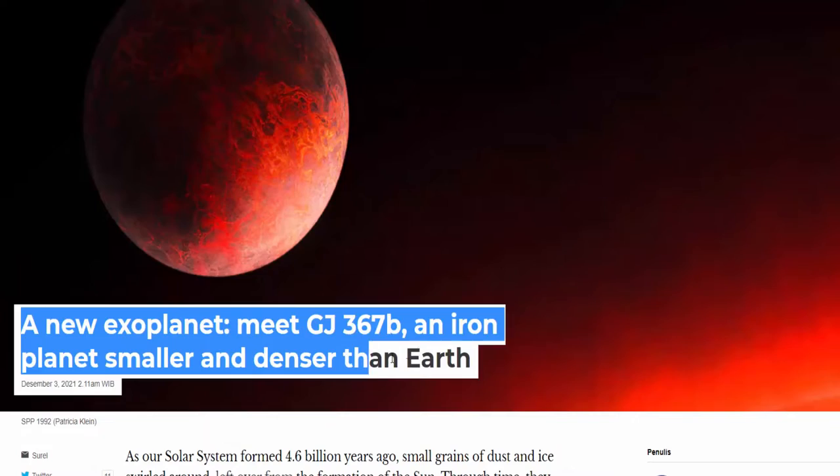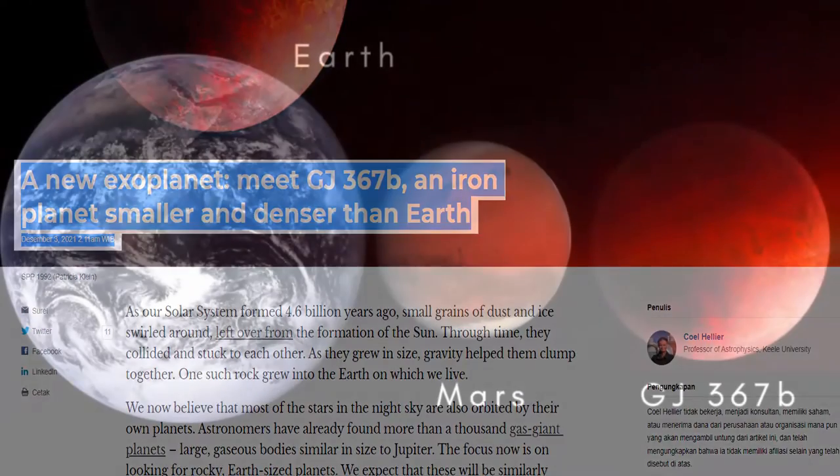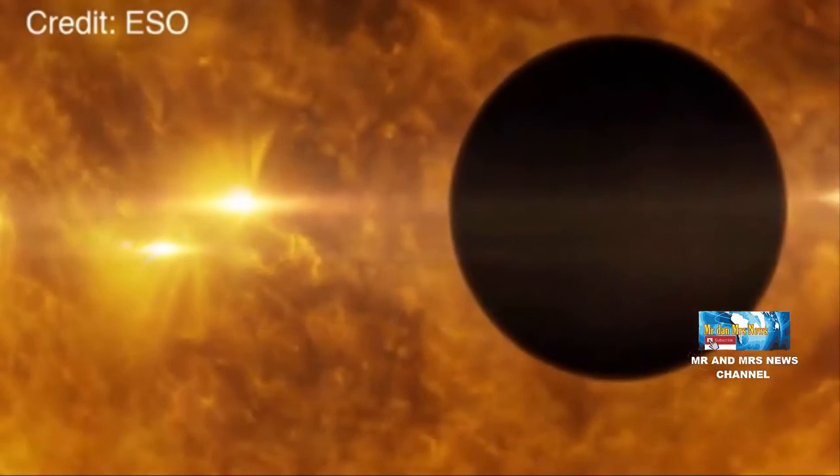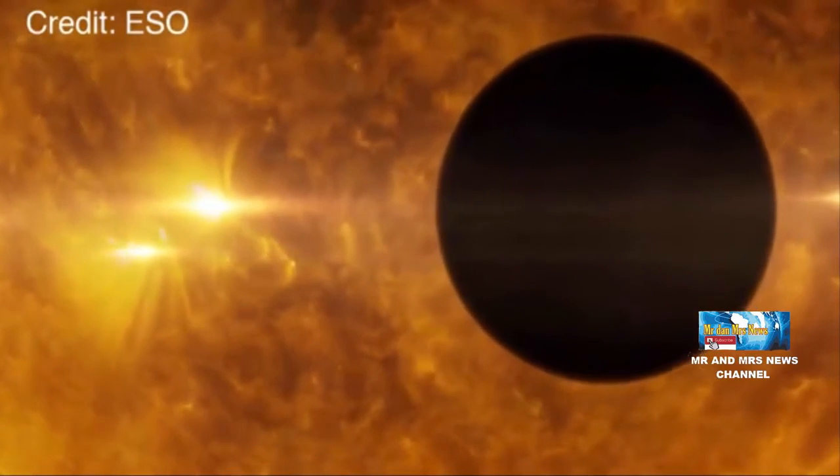Planet ini seukuran Mars, jadi hanya setengah masa bumi yang menjadikannya salah satu exoplanet paling ringan yang ditemukan sejauh ini. Sekitar 86% interior planet ini terbuat dari inti besi dan nikel yang juga membuatnya sangat mirip dengan Merkurius.